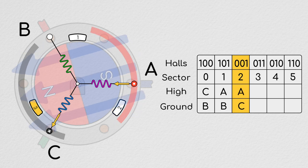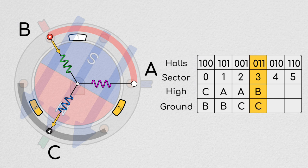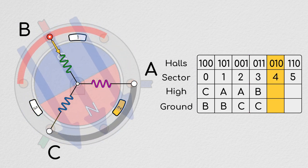In Sector 3, we will disconnect A from high and swap B in its place. For Sector 4, we will disconnect C from ground and connect A there instead.